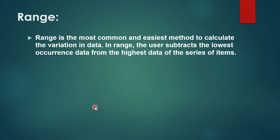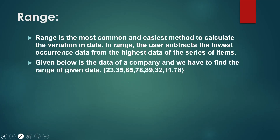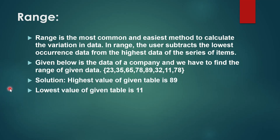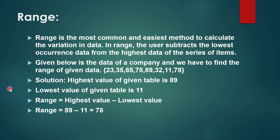Range is the most common and easiest method to calculate the variation in the data. In range, you subtract the lowest value from the highest value in the series. For example, if the data points include values like 23, 35, 65, with the highest value being 89 and the lowest being 11, the range formula is highest minus lowest, so the range is 78.